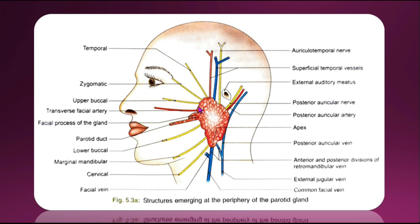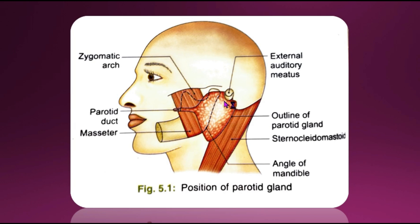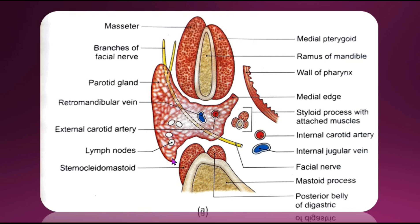Regarding the borders: the anterior border separates the superficial surface from the anteromedial surface, extending from the anterior part of the superior surface to the apex. Structures emerging at this border include the parotid duct, terminal branches of the facial nerve, and transverse facial vessels. The posterior border separates the superficial surface from the posteromedial surface and overlaps the sternocleidomastoid muscle. The medial or pharyngeal border separates the anteromedial from the posteromedial surface and is related to the lateral wall of the pharynx.